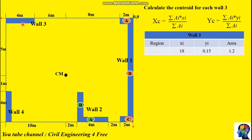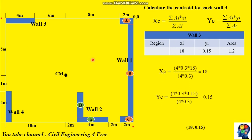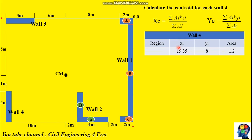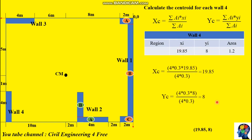For wall 3, which is a single wall, the centroidal distance in x is 2 + 8 + 6 + half of the wall width = 16 + 2 = 18, and in the vertical y direction it is 0.3 divided by 2 = 0.15. For wall 4, using a similar formula, the centroid values obtained are (19.85, 8).